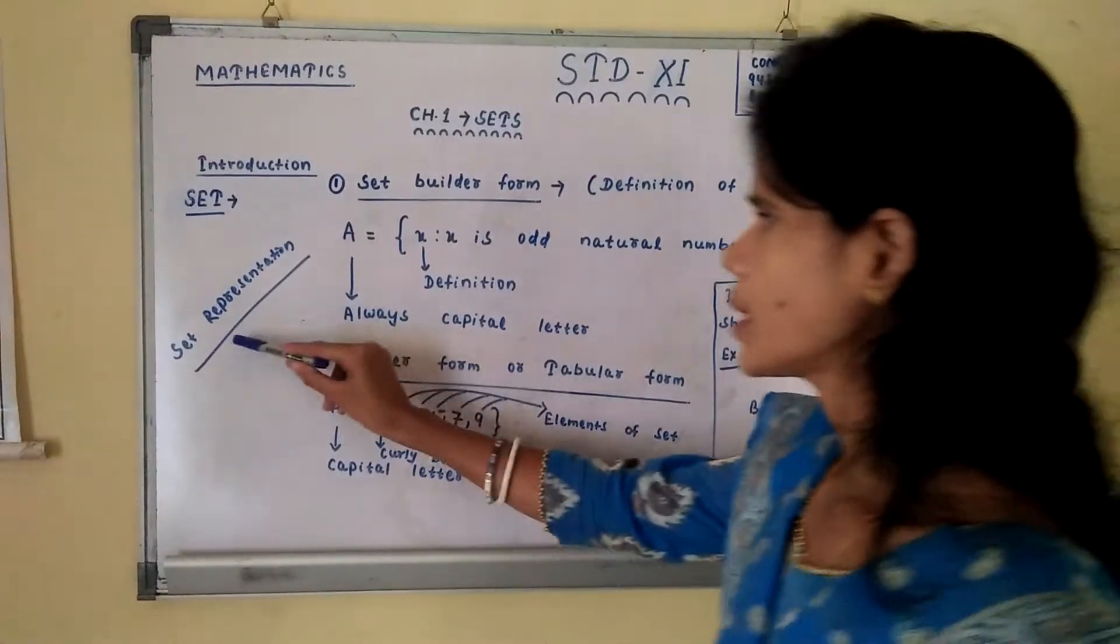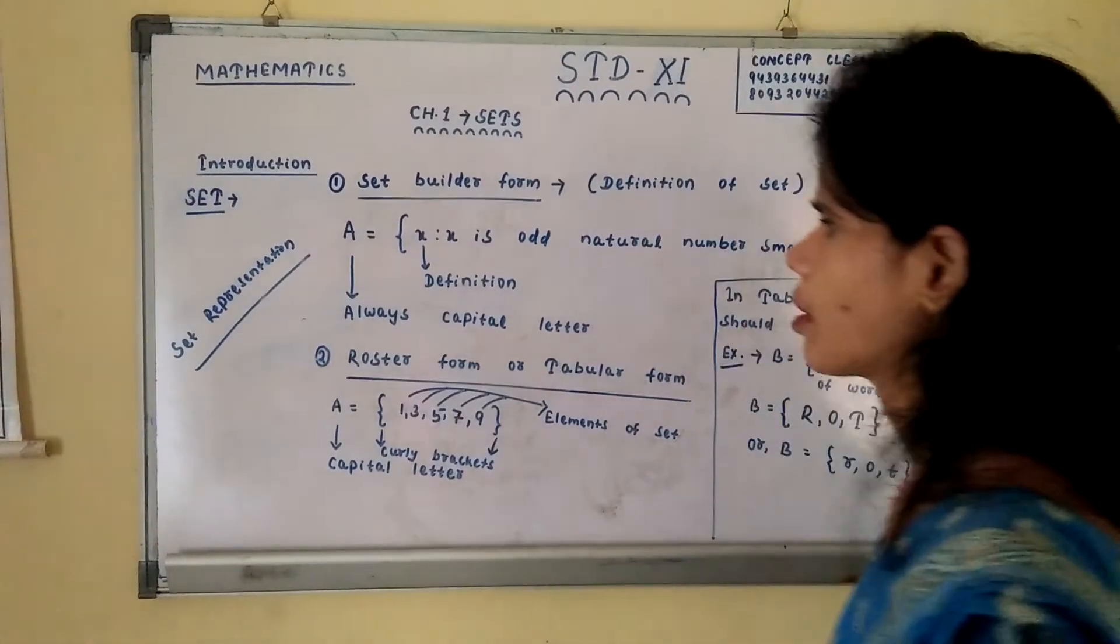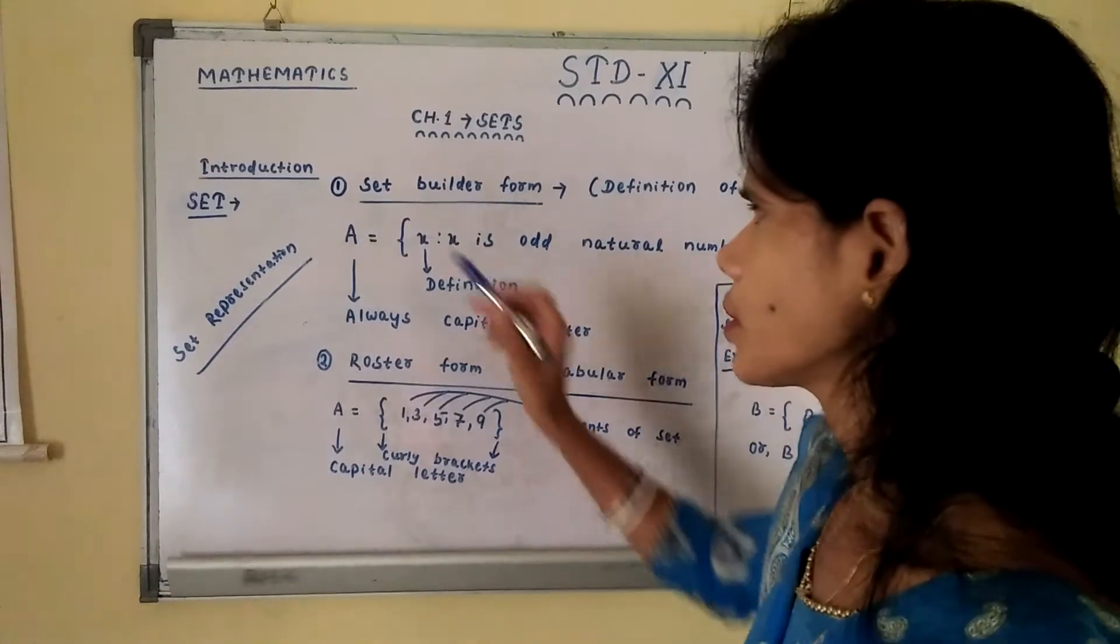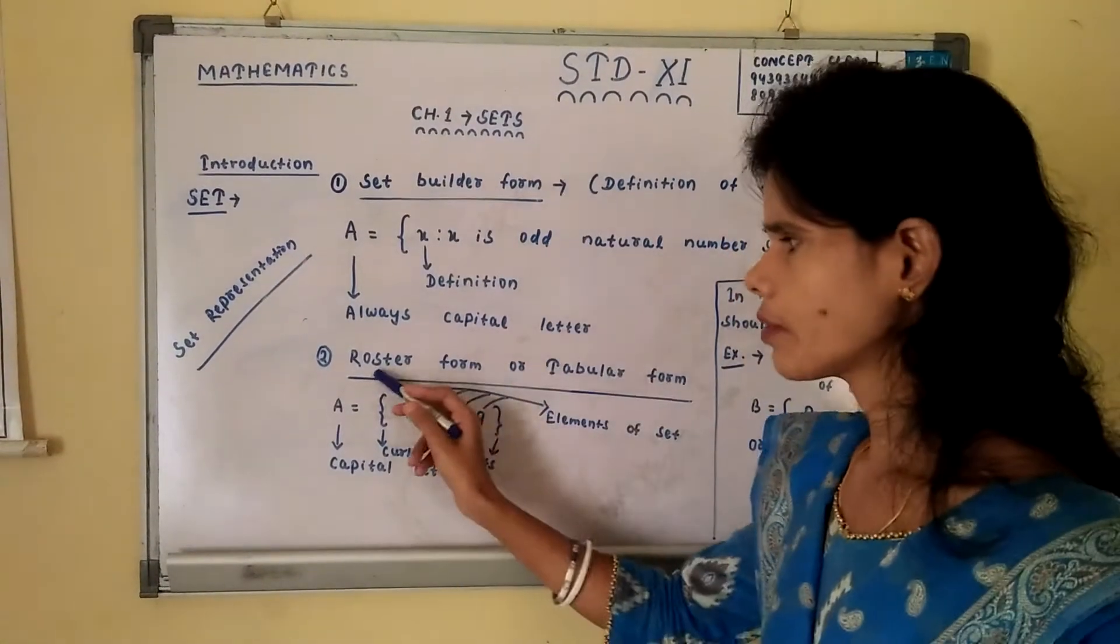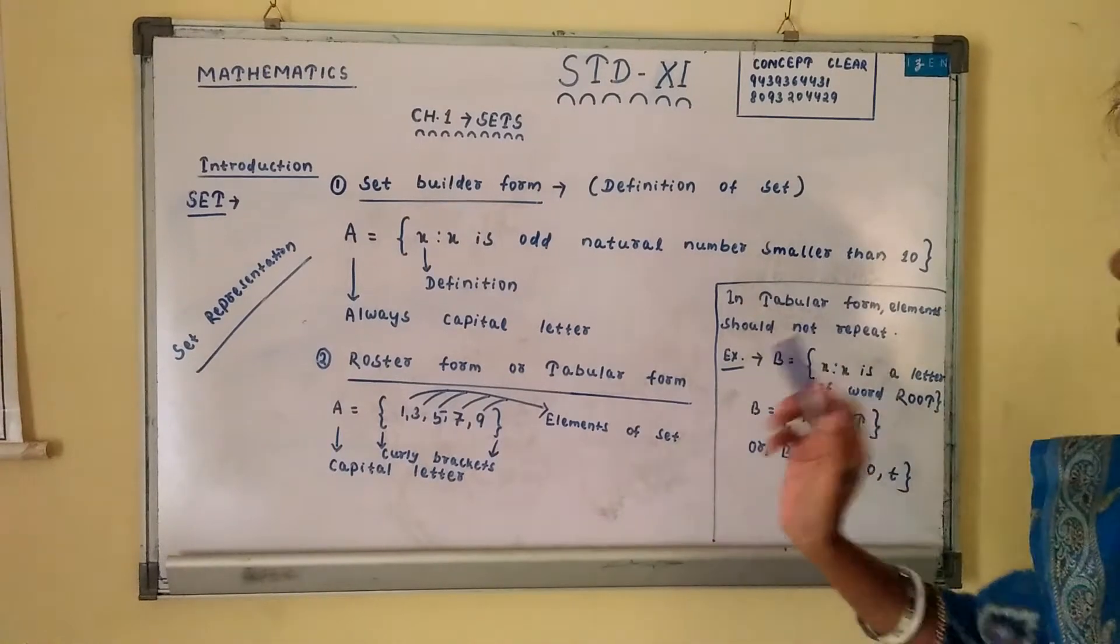We have to learn about set representation. We have already learned the set representation are in two ways. First one is set builder form and second one is roster form or tabular form.